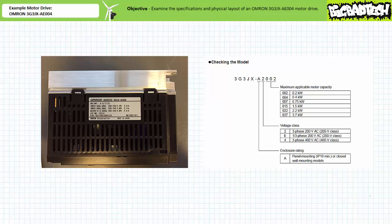The model is obviously a 3G3JX. The enclosure rating of A specifies it can be panel or closed wall mounted. The voltage class entry of E specifies this motor drive can use single or three phase AC with a nominal 200 volt input.